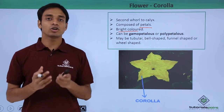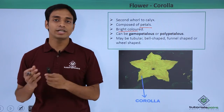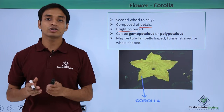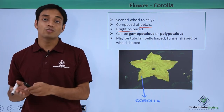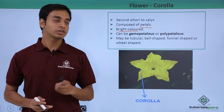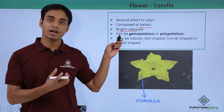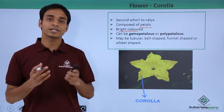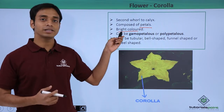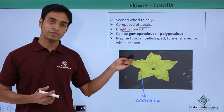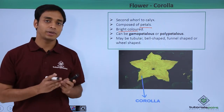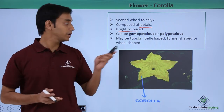The reason petals are brightly colored is in order to attract insects or pollinating agents for the process of pollination. Pollination is essential for flowers — or for plants bearing flowers — in order to perform sexual reproduction. So pollination is aided by the brightly colored petals of a flower.